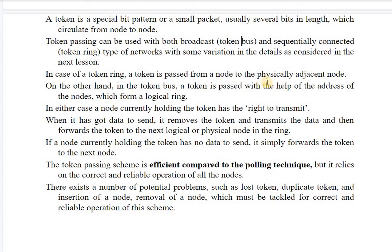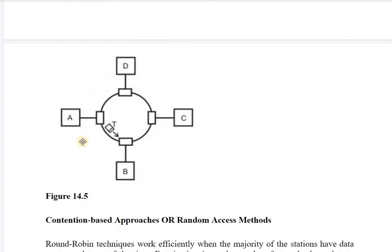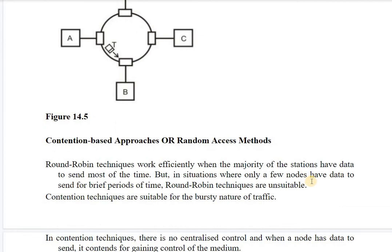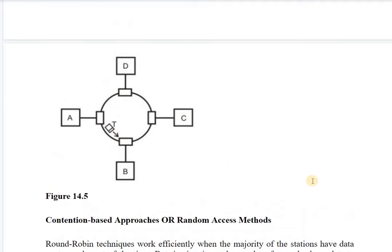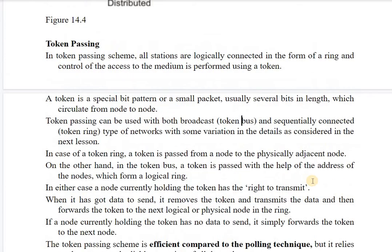In token ring, a token is passed from a node to the physically adjacent node. In token bus, the token is passed using the address of nodes which form a logical ring. Bus topology is a channel through which all computers are connected, and to make it work with token passing, a logical ring is formed so all channels are connected to the ring logically.